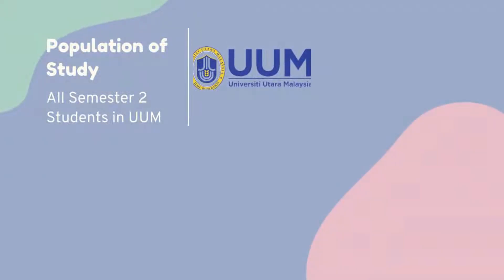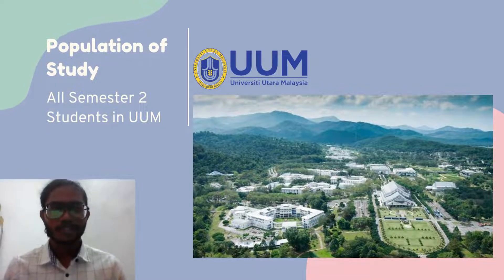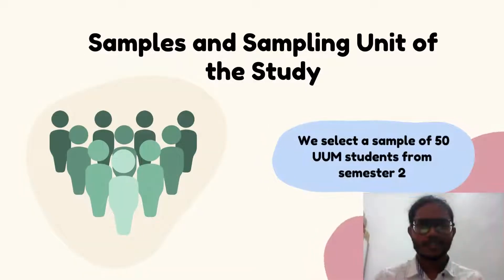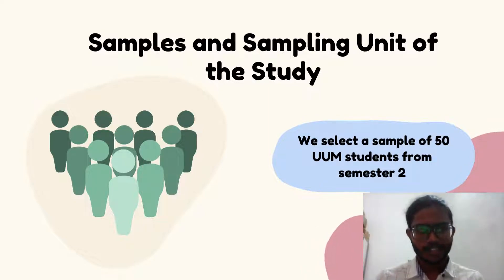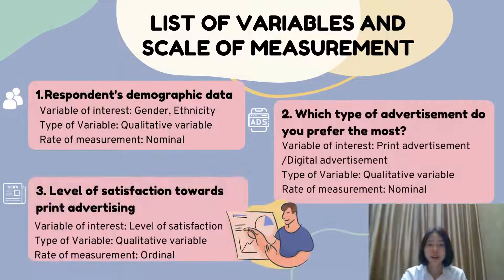Next is about the population of study, which involves all semester 2 students in UUM. Next is about samples and sampling unit of the study. According to our research, we selected a sample of 50 UUM students from semester 2. Thank you Lira, and now we are going to talk about the list of variables and scale of measurement.